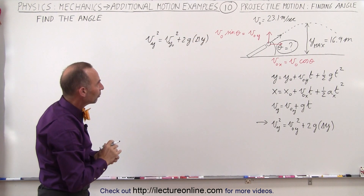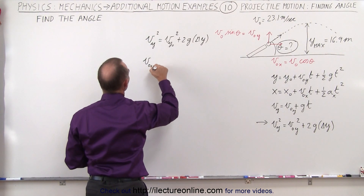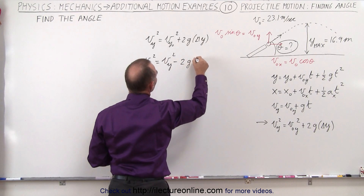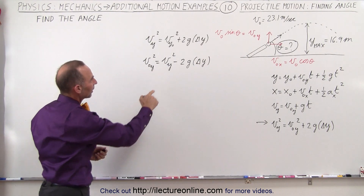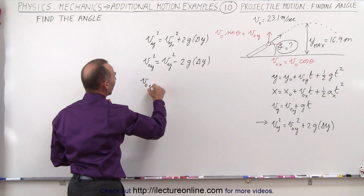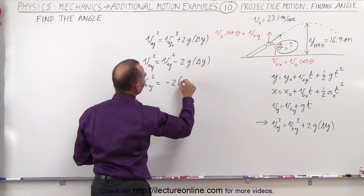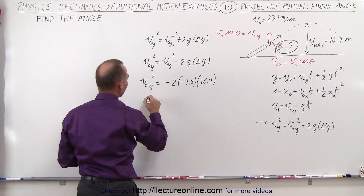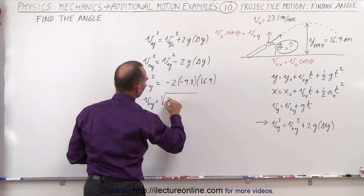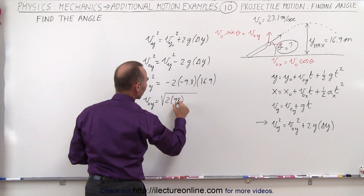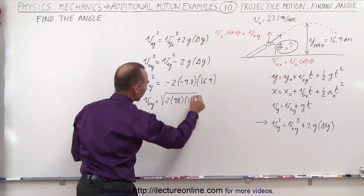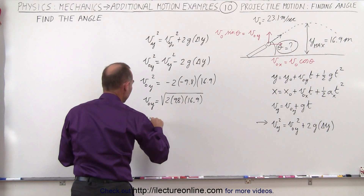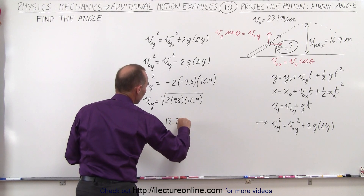We're going to solve for the initial velocity in the y direction. The initial velocity in the y direction squared is equal to v_y squared minus 2 times g times delta y. Since the final velocity is zero, we get v_iy squared equals negative 2 times negative 9.8 times 16.9 — the change in y from 0 to the maximum of 16.9. Taking the square root of both sides, v_iy equals the square root of 2 times 9.8 times 16.9, which equals 18.2 meters per second.